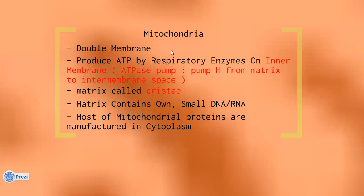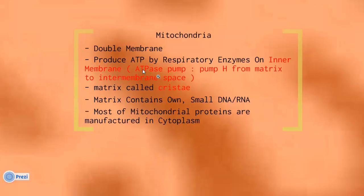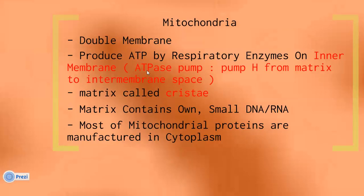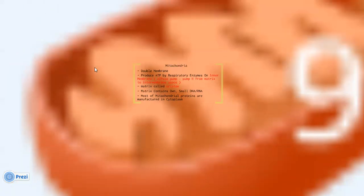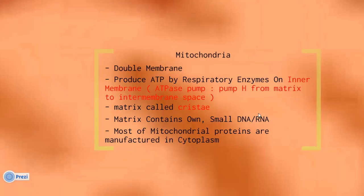The mitochondria has a double membrane. The outer membrane and inner membrane are separated by an intermembranous space, and the inner space is called the matrix. ATP is produced by respiratory enzymes on the inner membrane. The inner membrane has an ATP synthase pump which pumps hydrogen from the matrix to the intermembrane space — this movement of hydrogen is responsible for making ATP. The matrix is called the cristae, and mitochondria contain their own DNA, though most mitochondrial proteins are manufactured in the cytoplasm.